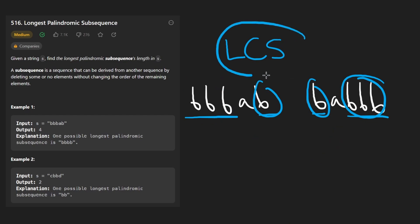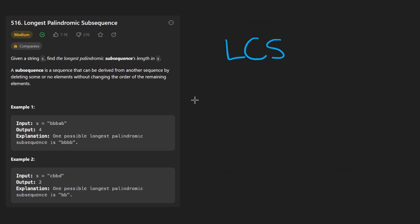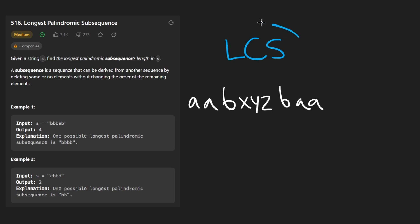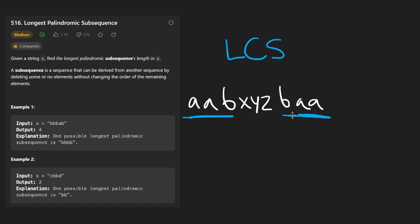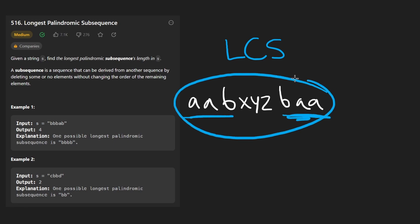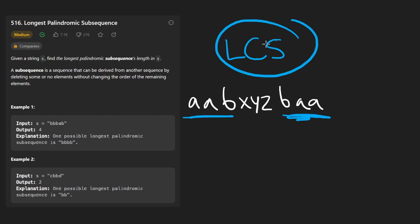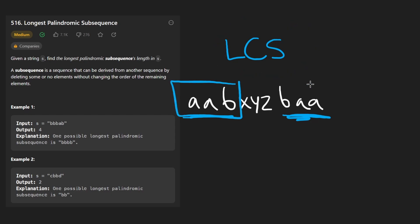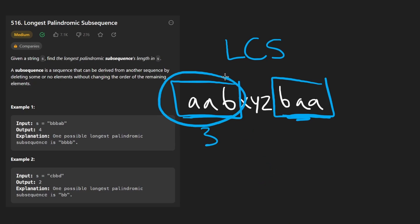But is it guaranteed that the longest common subsequence is always going to be a palindrome? Why is that the case? What if we had a string like a, a, b and then some other characters x, y, z, and we took the reverse — b, a, a. Is it ever possible that LCS is going to find a subsequence that is not a palindrome? For example, identifying a, a, b of length three — which clearly is not a palindrome. My answer is no.